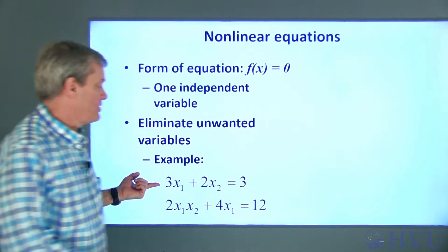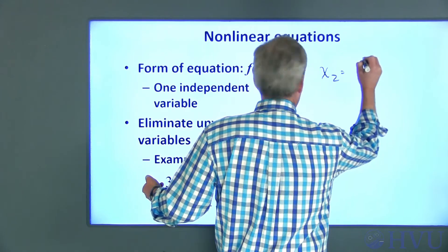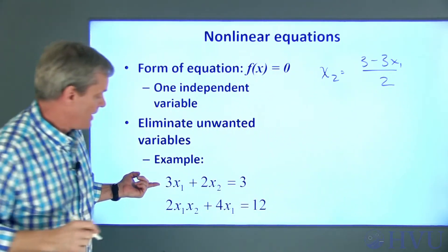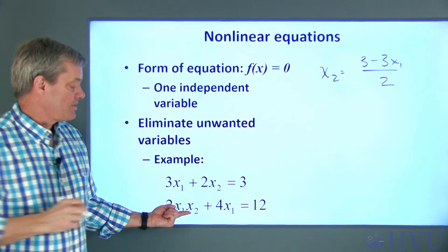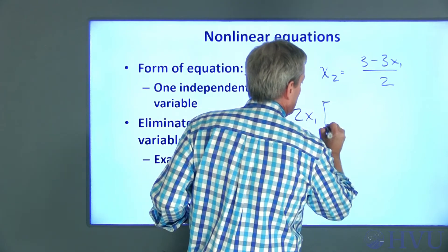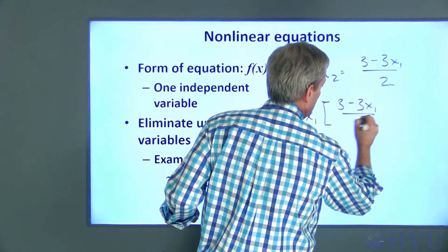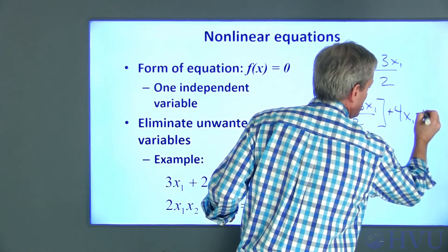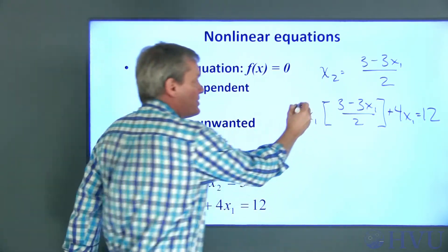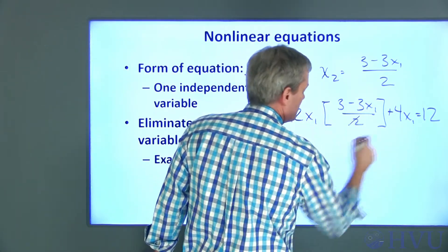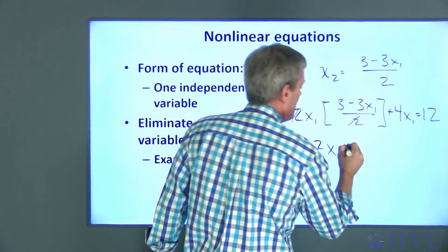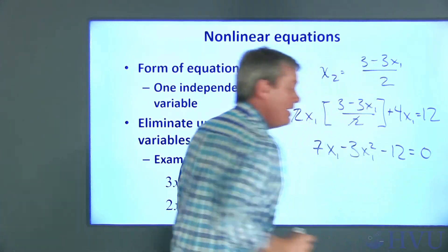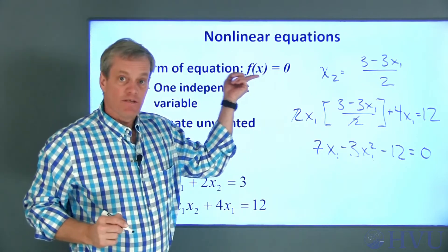So if I solve the first equation for x2, I get x2 = (3 - 3x1) / 2. Then I can plug that in for x2 to get 2x1 * (3 - 3x1)/2 + 4x1 = 12. The 2 cancels, giving 3x1 + 4x1 = 7x1 - 3x1². Bringing everything to one side: 7x1 - 3x1² - 12 = 0. This equation is of the f(x) = 0 form.